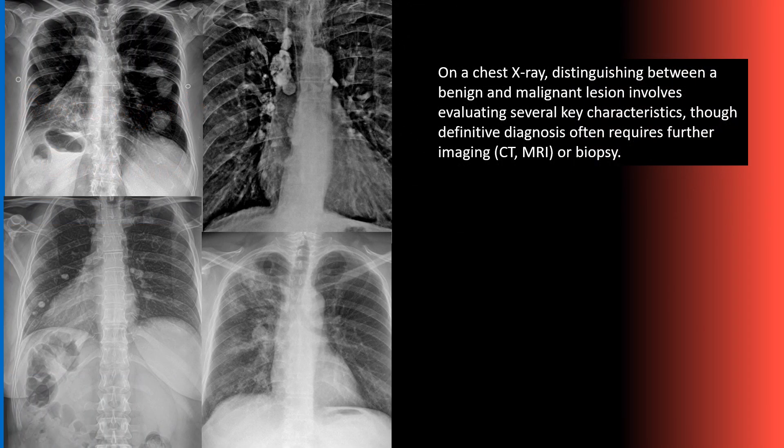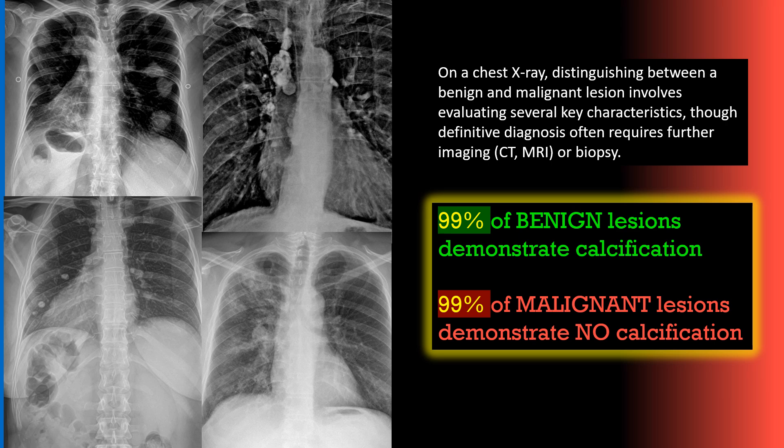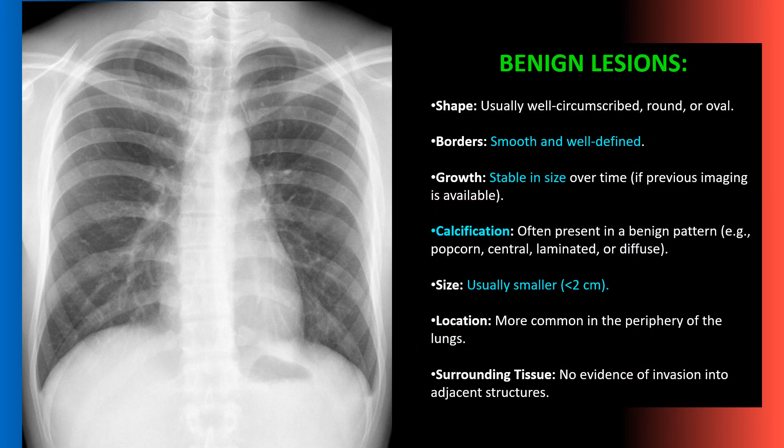Chest x-rays can be very helpful in distinguishing benign versus malignant lesions. One of the things we're looking for is whether there is calcification or not. Approximately 99% of benign lesions demonstrate calcification, and approximately 99% of malignant lesions do not present with any calcification. A benign lesion in the chest should appear smooth and well-defined, very stable in size over time, often present with calcification, and typically be smaller than two centimeters in size.